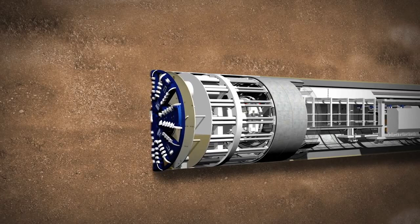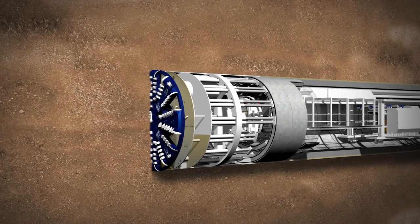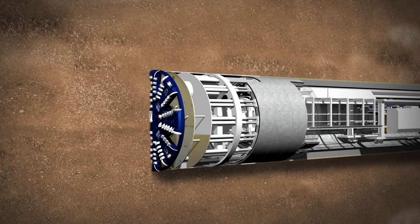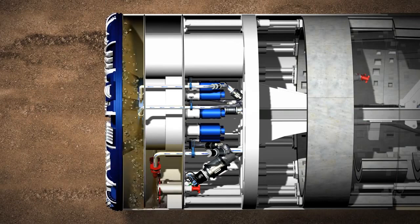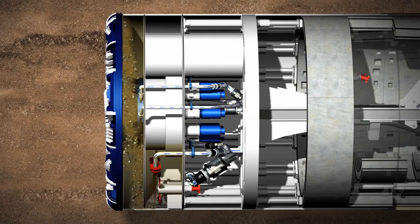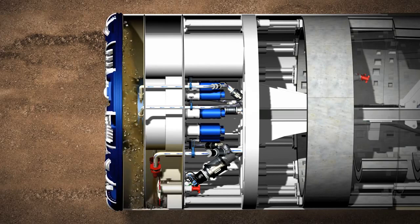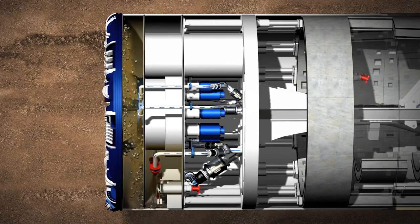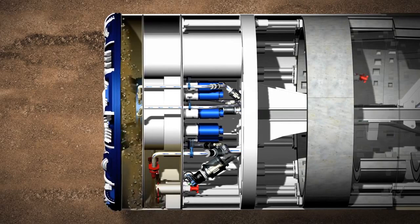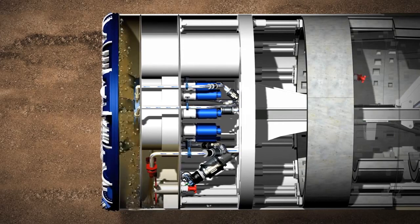Bentonite supports the excavation face and acts as a suspension medium for excavated material. The excavation chamber is behind the cutting wheel and separated by a submerged wall from the working chamber. The excavation is completely filled with bentonite and the working chamber is approximately two-thirds filled.